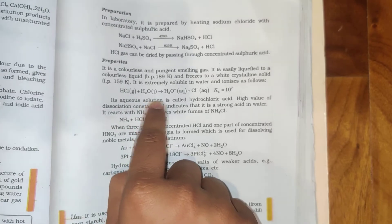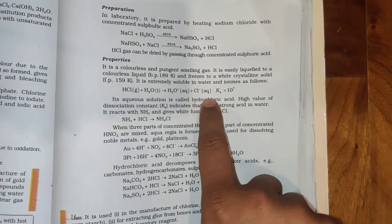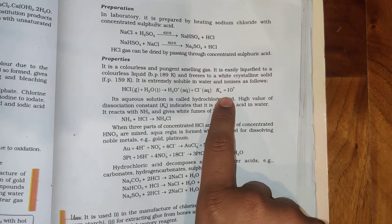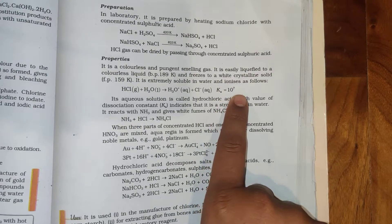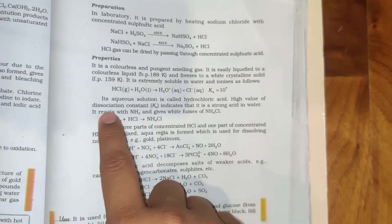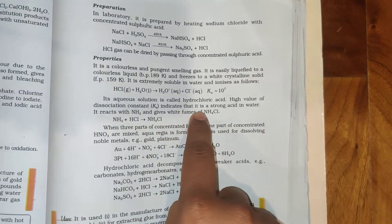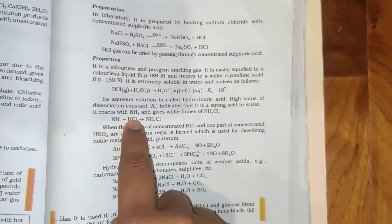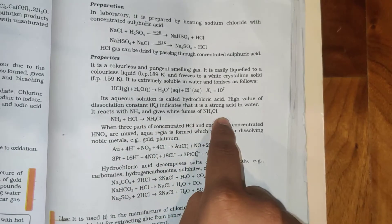HCl plus H2O gives H3O plus Cl minus at constant Ka 10 raised to the power 7. Its aqueous solution is called hydrochloric acid. High value of dissociation constant Ka indicates that it is a strong acid in water. It reacts with NH3 and gives white fumes of NH4Cl.